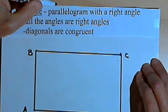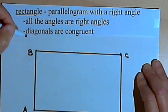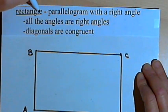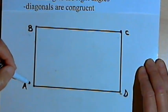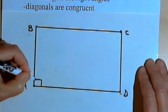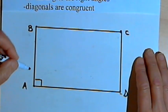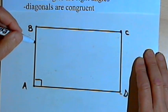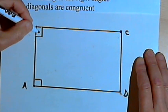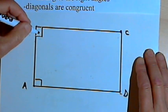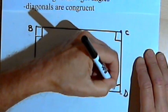The definition of a rectangle is that it's a parallelogram with a right angle. The two properties are: all the angles are right angles, and the diagonals are congruent. If I take rectangle ABCD and label one angle as a right angle, I can show all angles are right angles. In a parallelogram, consecutive angles are supplementary. So if angles A and B are supplementary and one is 90 degrees, the other must also be 90 degrees. Going around the rectangle, I can mark all four angles as right angles.